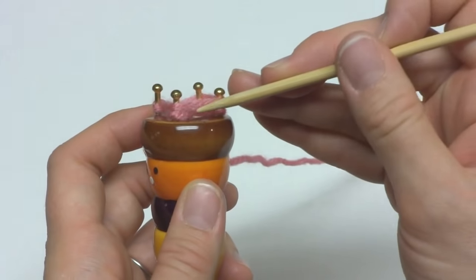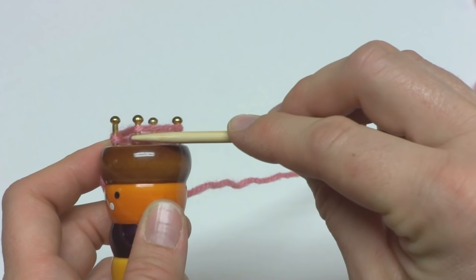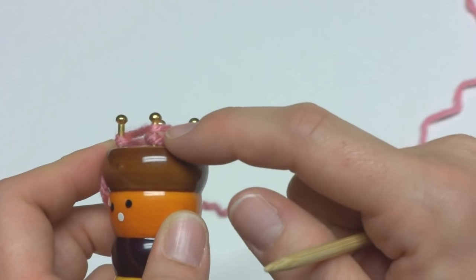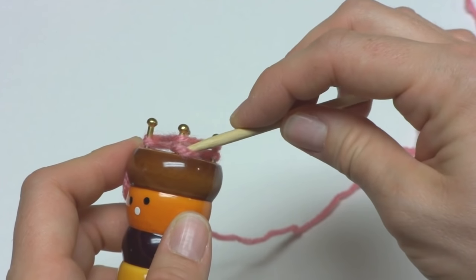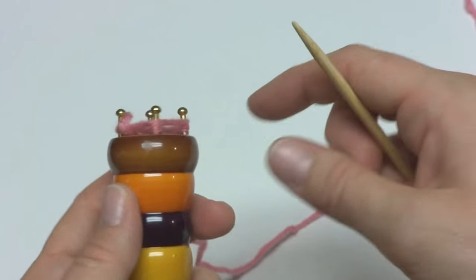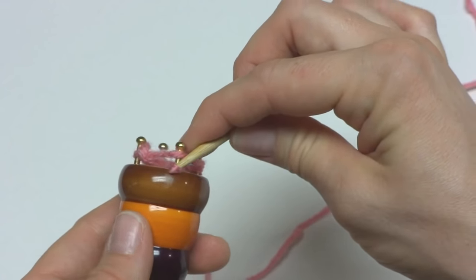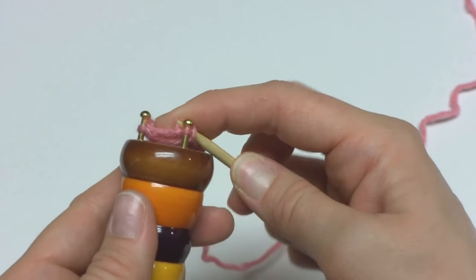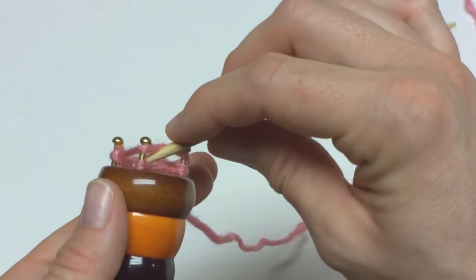Then we're going to do a lift. You have two pieces of yarn loop here. You're going to lift this first loop that's underneath up and over that first peg. Go to the next peg, take that yarn, and lift it up and over. Just like that. I'm just going to keep doing this all the way around.